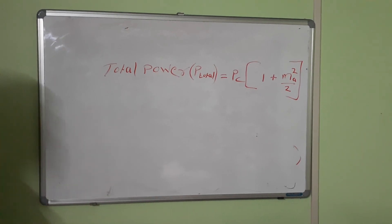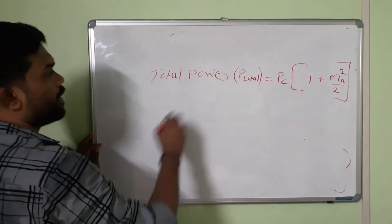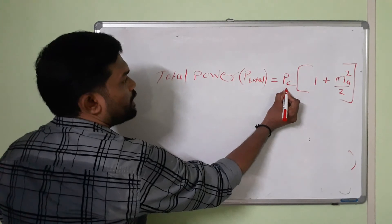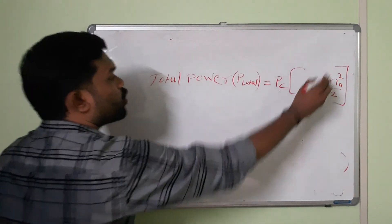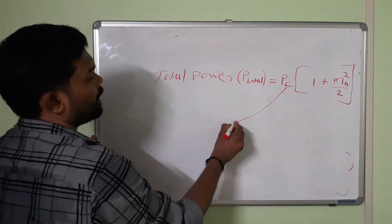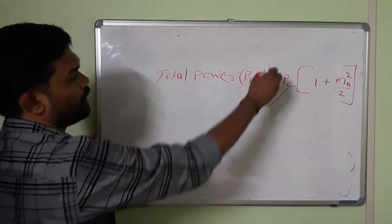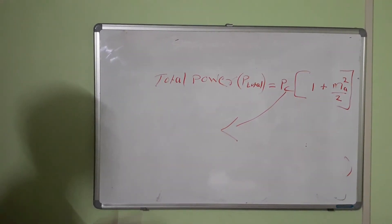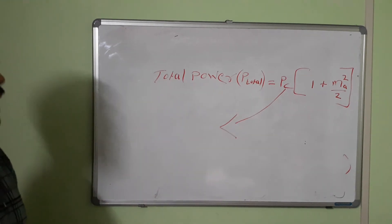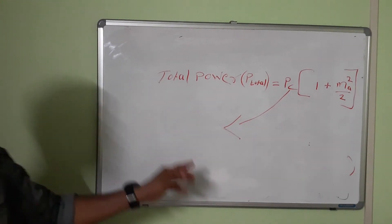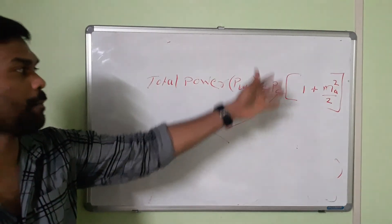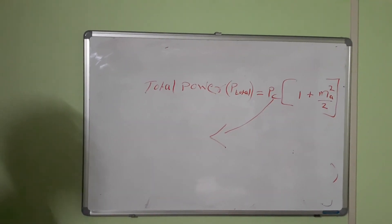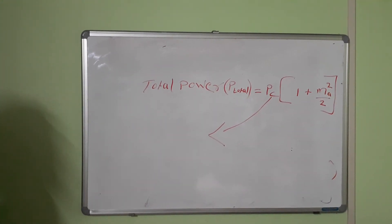The total power of the AM signal: P_total = P_C · (1 + m_a² / 2), where P_C is the carrier power and m_a is the modulation index. So the total power in an amplitude modulated signal is P_total = P_C · (1 + m_a² / 2), where P_C is the power of the carrier signal and m_a is the modulation index.